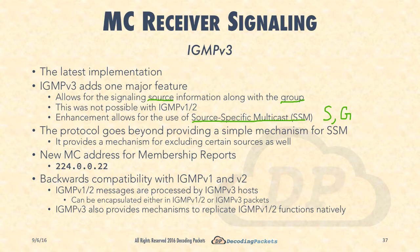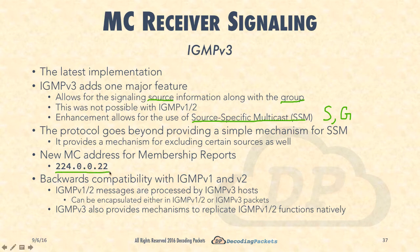There is also a new multicast address exclusively for membership reports. In version 1 and version 2, reports were sent to the actual group's multicast address, or 224.0.0.1 for all systems or 224.0.0.2 for all routers multicast. In version 3 there is a brand new multicast address: 224.0.0.22. This is exclusively for use by IGMP version 3 routers, so all routers now listen to this particular signaling. It allows the implementation to streamline a lot of what was done in separate messages in version 1 and 2.